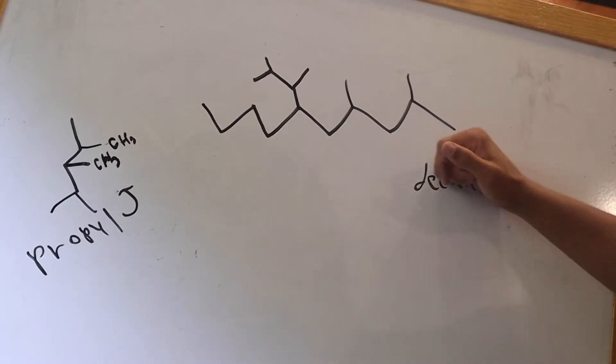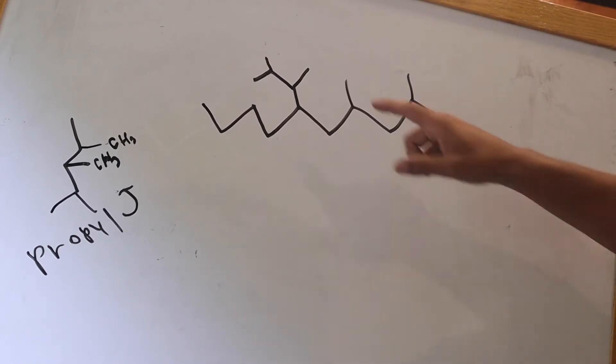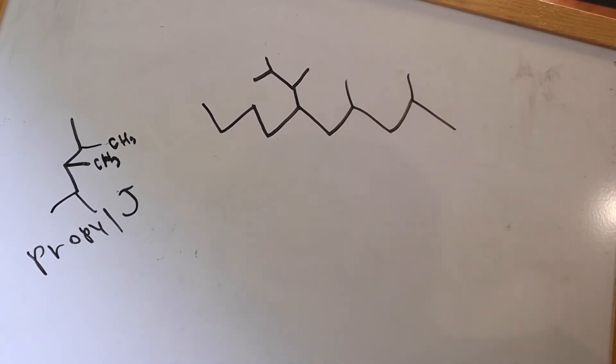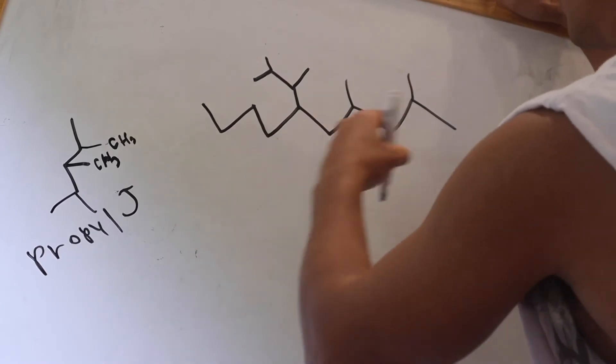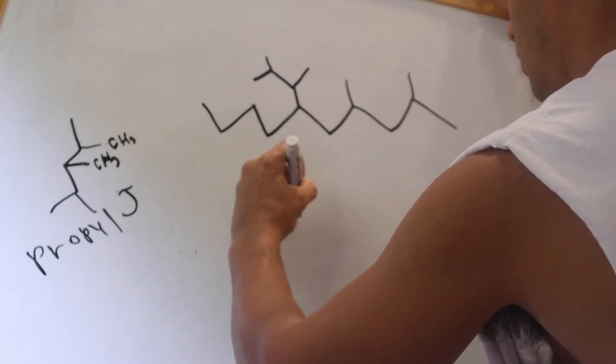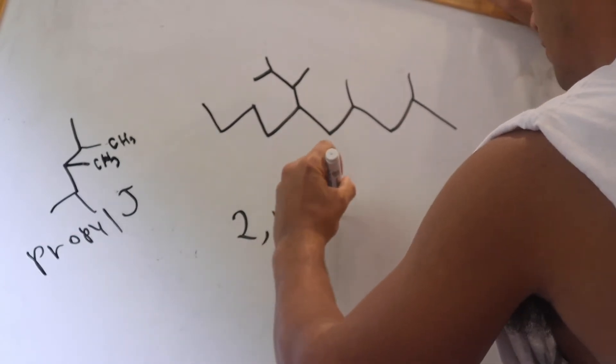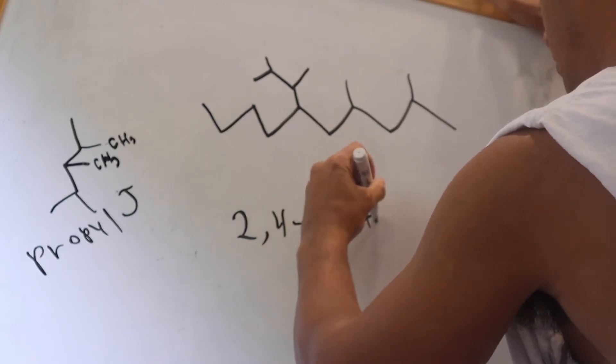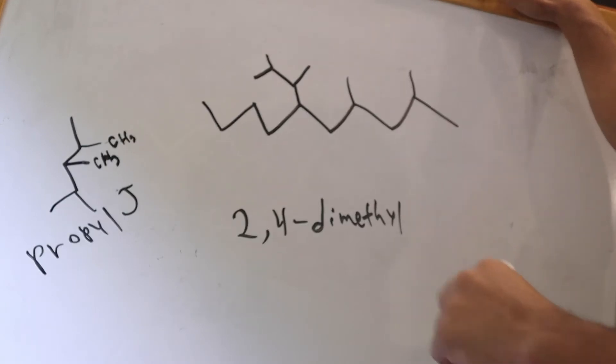We're going in alphabetical order, so we have a propyl group but we have methyl groups. M comes before P, so we're going to do the methyls first. On carbon 2 and carbon 4 you have a methyl group, so it'll be 2,4-dimethyl because there's two.